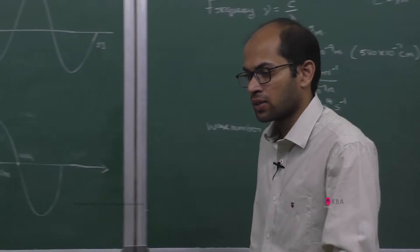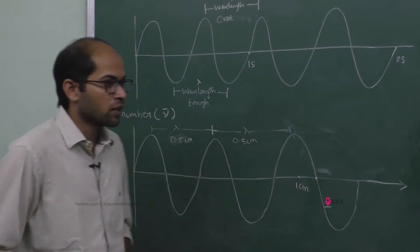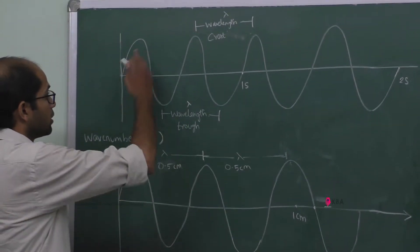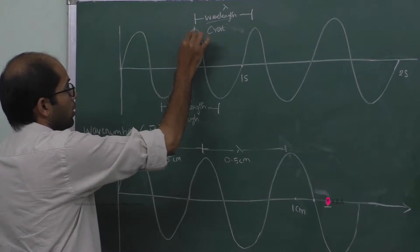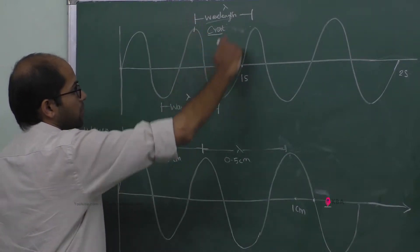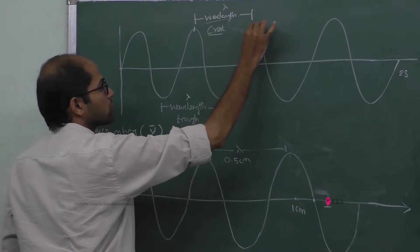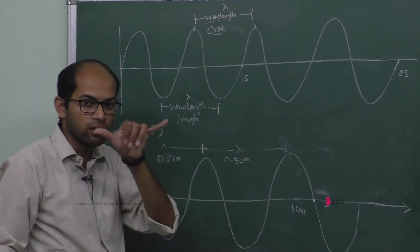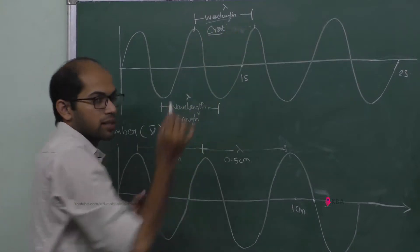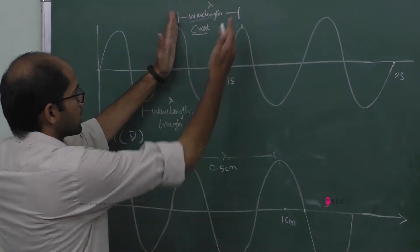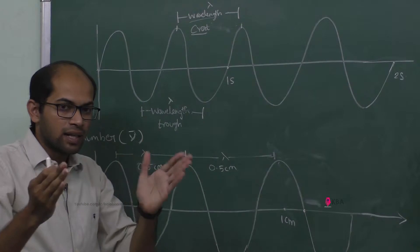First, let's understand wavelength. Consider a wave — it has crests at the top and troughs at the bottom. The wavelength is the distance from one crest to the next crest, or one trough to the next trough. The unit is nanometers; one meter equals one nanometer in this context.